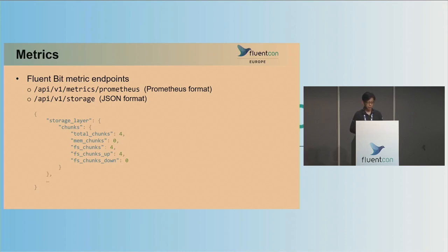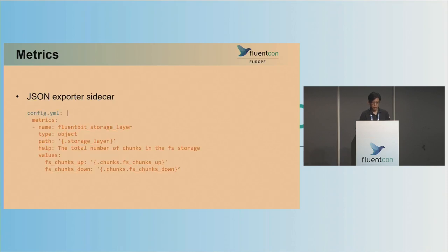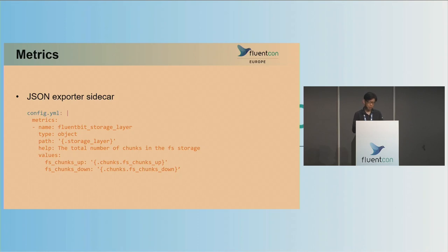Before moving on, pay attention to the JSON path of the FS chunks up and down — it is storage layer, chunks, FS chunks up or down. To export this storage metric, we use a JSON exporter deployed as a sidecar. You can find the JSON exporter in the Prometheus community GitHub.